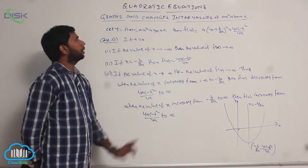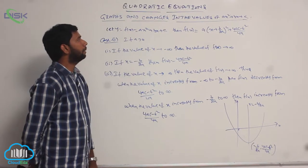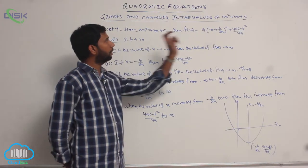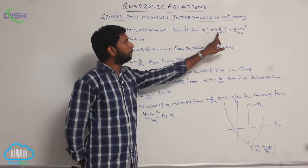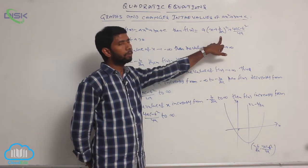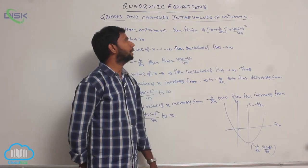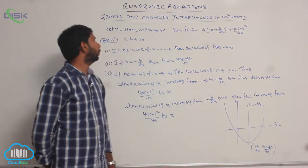If y is equal to f of x is equal to ax squared plus bx plus c, then f of x equals a times the quantity x plus b over 2a, whole squared, plus 4ac minus b squared over 4a.